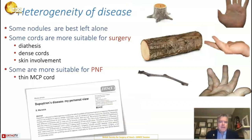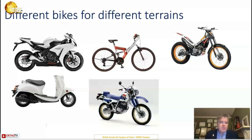Some nodules — these tree stumps — are best left well alone. Some cords — logs, if you like — are more suitable to surgery, particularly those with a diathesis or big, dense cords. Others are more suitable, like twigs, for needle fasciotomy. These are all Honda bikes. When we see a patient with Dupuytren's, we choose the right bike for the right terrain — the right tool for that particular patient in front of us.